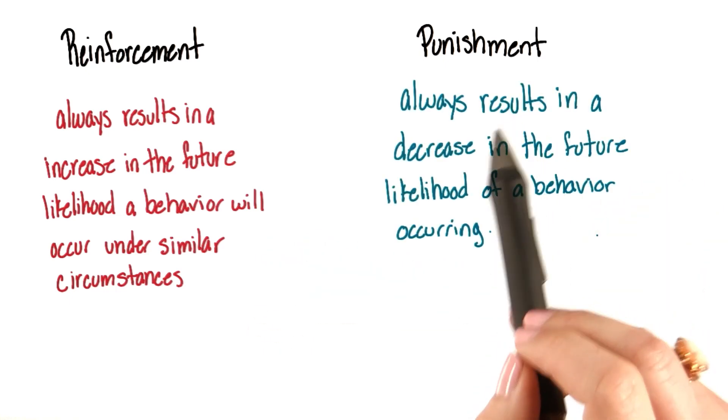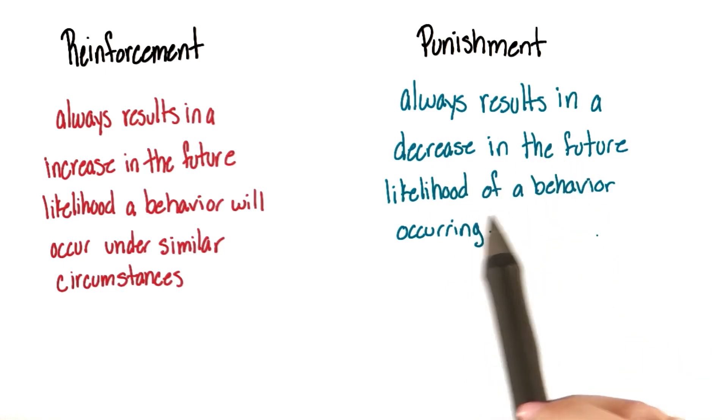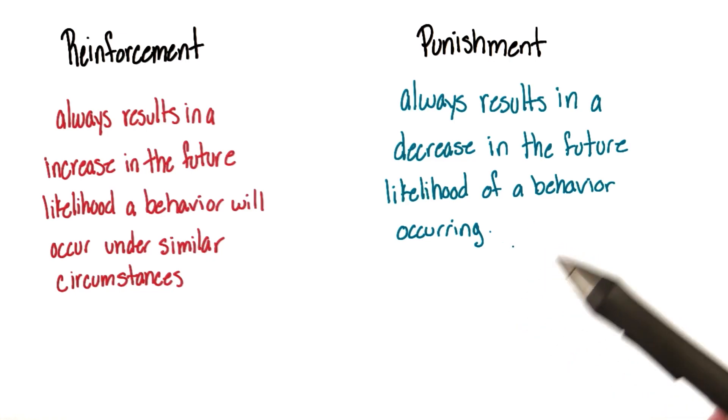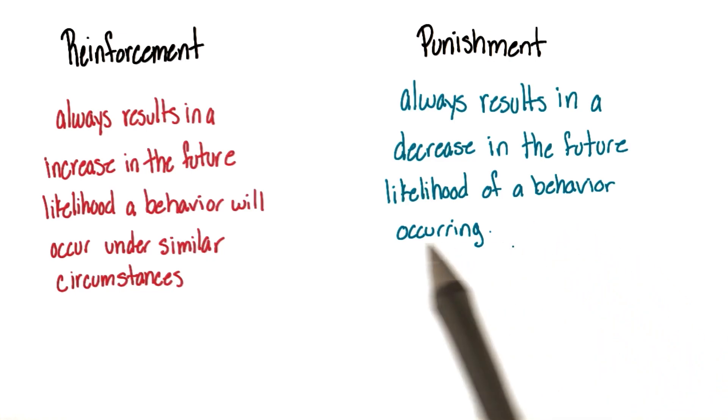On the other hand, a punishment always results in the decreased likelihood of a behavior occurring. So, for example, if Saki was punished every time she gave a kiss, she would be less likely to do that behavior again.